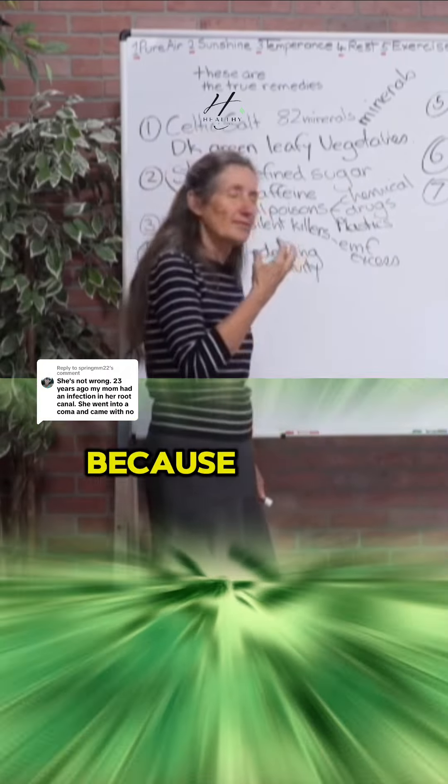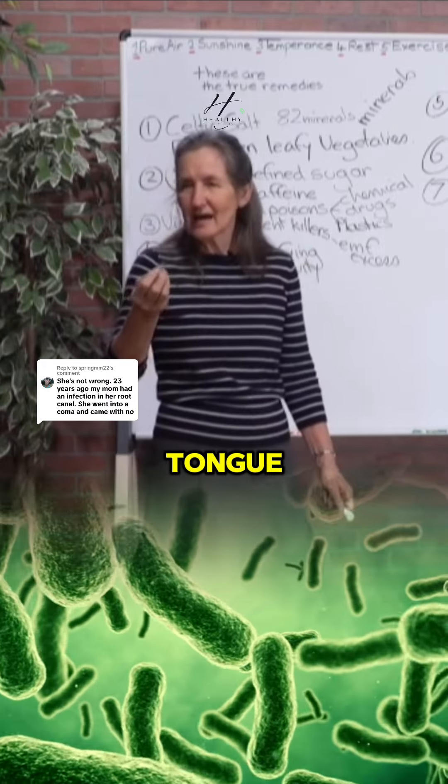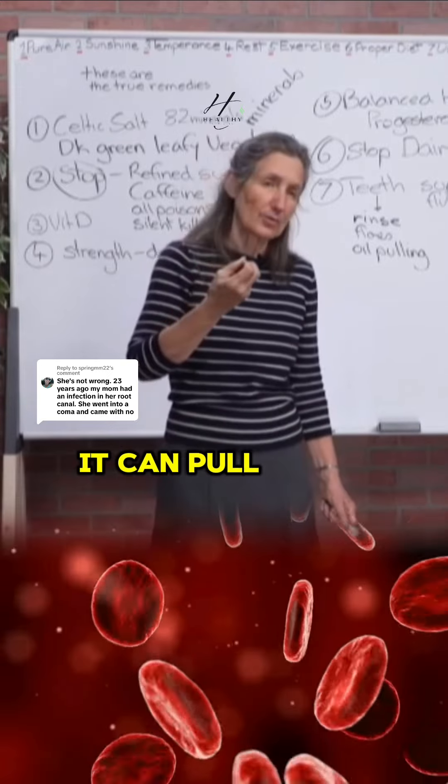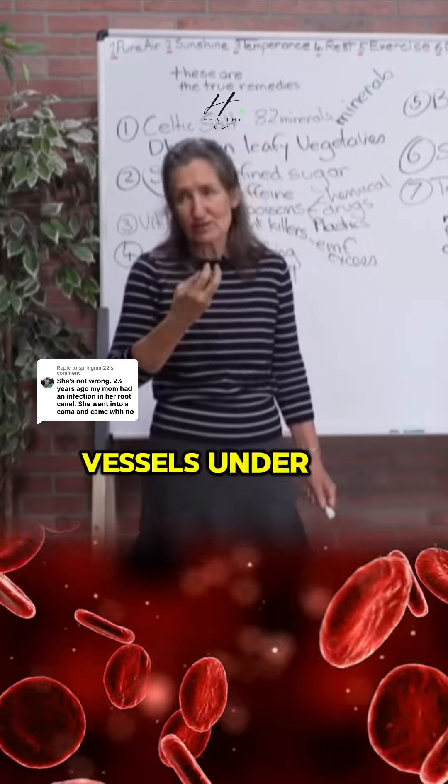It's called oil pulling because it can pull waste out of the tongue, the glands under the tongue, and the blood vessels under the tongue.